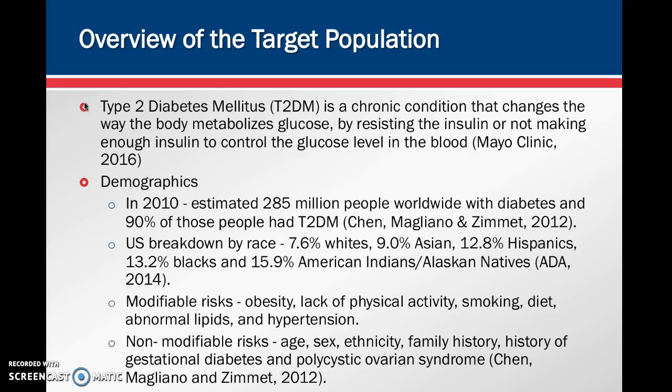Type 2 diabetes comes with modifiable and non-modifiable risks. Modifiable risk factors include obesity, lack of physical activity, smoking, diet, abnormal lipids, and hypertension. Non-modifiable risk factors include age, sex, ethnicity, family history, history of gestational diabetes, and polycystic ovarian syndrome.